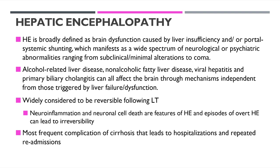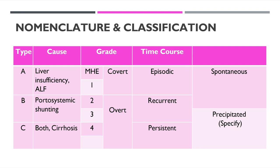Coming to the classification and nomenclature — three different types have been described in the AASLD as well as the EASL guidelines: A, B, and C. A stands for acute liver failure where there is total liver insufficiency. B stands for portosystemic shunting or bypass. C is seen in patients with cirrhosis, involving both liver insufficiency and shunting.